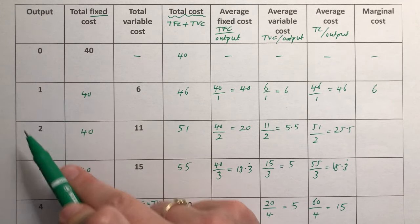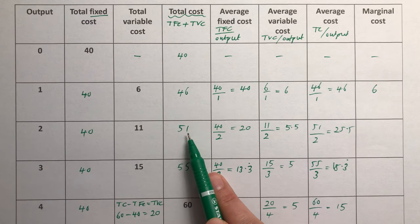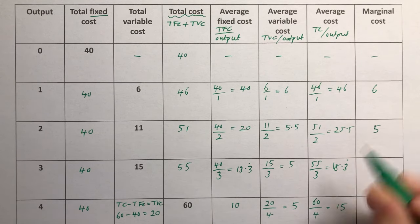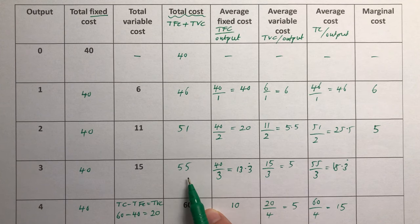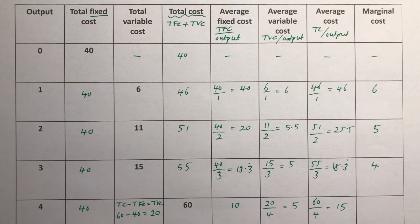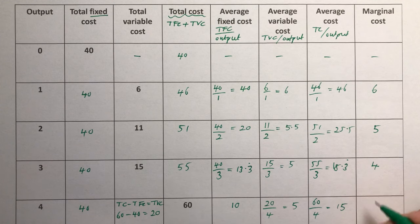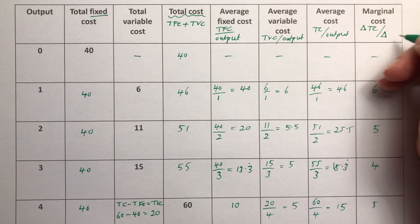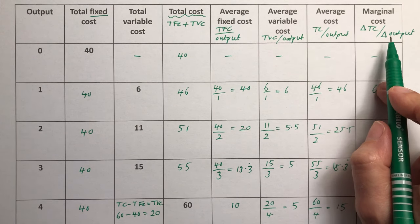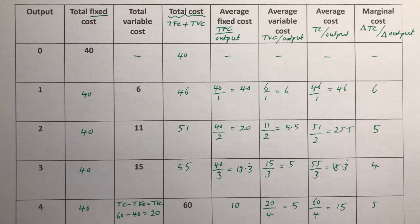When we produce two rather than one, total costs go from 46 to 51, so the marginal cost is 5. Producing three rather than two, costs go from 51 to 55, giving a marginal cost of 4. With the fourth car, costs go from 55 to 60, so marginal cost is 5. The formula is: change in total cost divided by change in output. You need to learn this because the change in output won't always be just one unit.